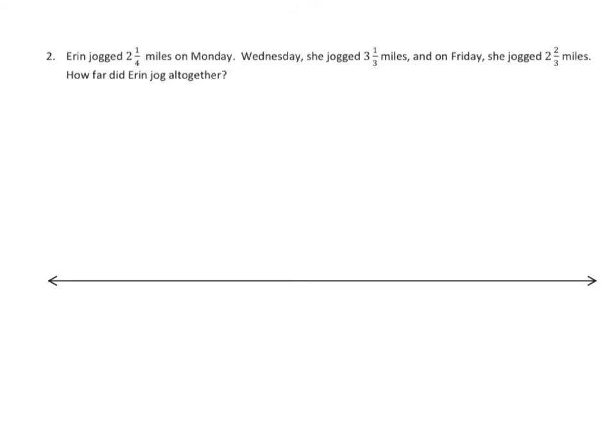This word problem is very similar to the one you're going to see in your homework. Erin jogged 2 and 1 fourth miles on Monday. Wednesday, she jogged 3 and 1 third miles. And on Friday, she jogged 2 and 2 thirds miles. How far did Erin jog altogether? Well, the thing we notice about this is we have 3 numbers as opposed to 2.